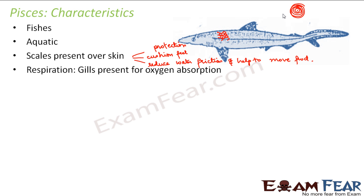Respiration in fishes — the exchange of oxygen — happens through gills. Just as lungs are present in human beings, gills are present in fishes for oxygen absorption from water.